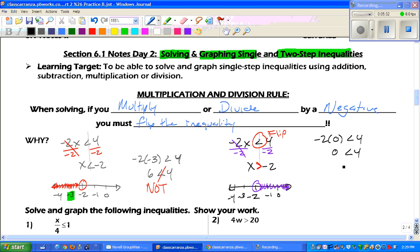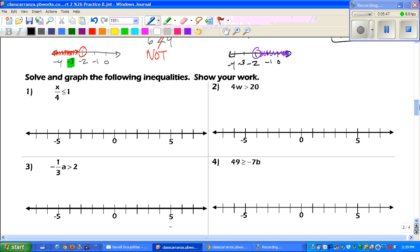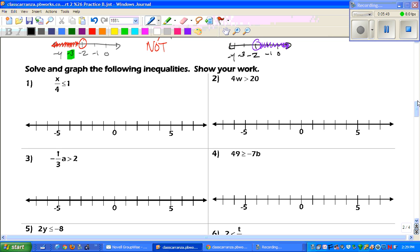Negative 2 times 0 is 0. Is 0 less than 4? Ding, ding, ding. You get a true statement. So, that's why we need to flip when we divide or multiply by a negative. Let's start going through this.